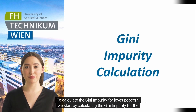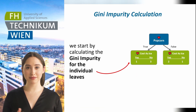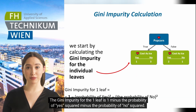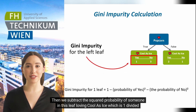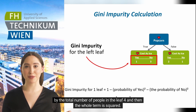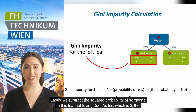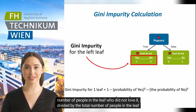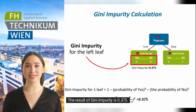To calculate the Gini impurity for loves popcorn, we start by calculating the Gini impurity for the individual leaves. The Gini impurity for the left leaf is 1 minus the probability of yes squared minus the probability of no squared. We subtract the squared probability of someone in this leaf loving Cool as Ice, which is 1 divided by the total number of people in the leaf, 4, squared. Then we subtract the squared probability of not loving it, which is 3 divided by 4, squared. The result is 0.375.